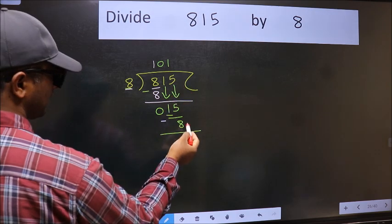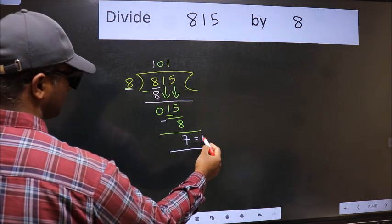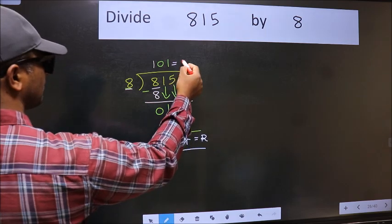No more numbers to bring it down. So we stop here. This is our remainder and this is our quotient.